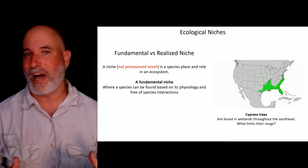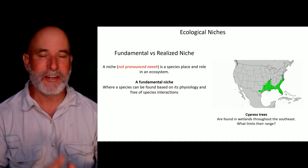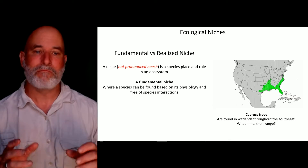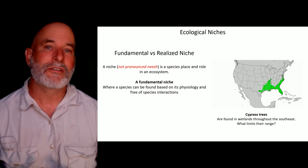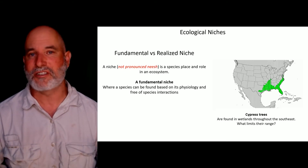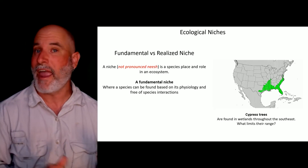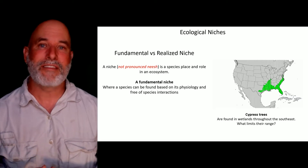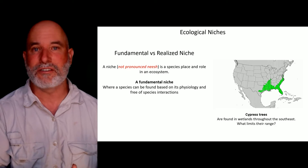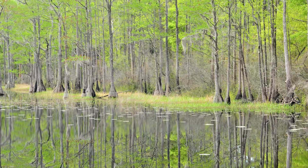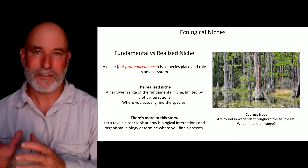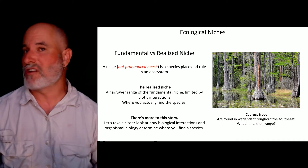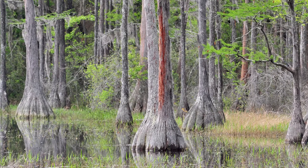Within this n-dimensional hypervolume of resources and biotic interactions, we can partition the niche into what is called the fundamental niche — where you can find a species based on its physiology, free from species interactions. On the map shown, the green shaded area covering much of the southeast represents the distribution of cypress trees. Out west, wetlands and swamps are less common, and that is where you typically find cypress trees — growing along the edge of a beautiful swamp, stream, or river. A cypress tree can grow throughout the southeast based on physiological tolerances.